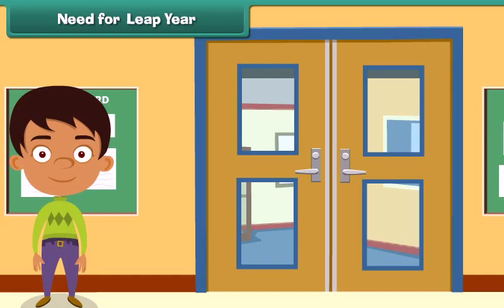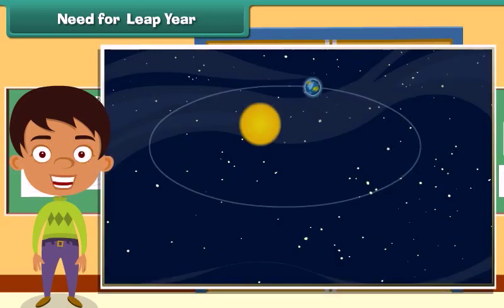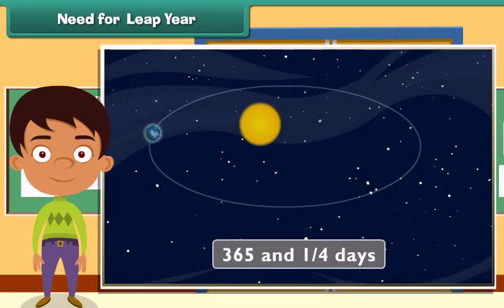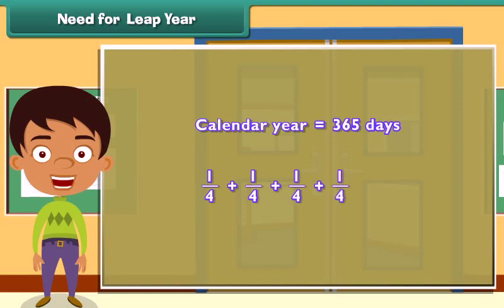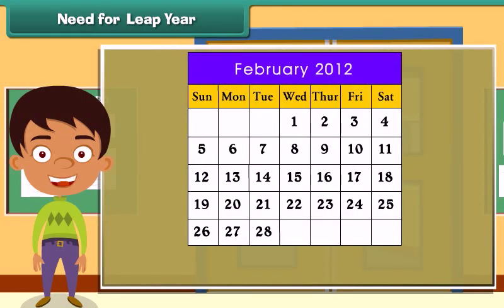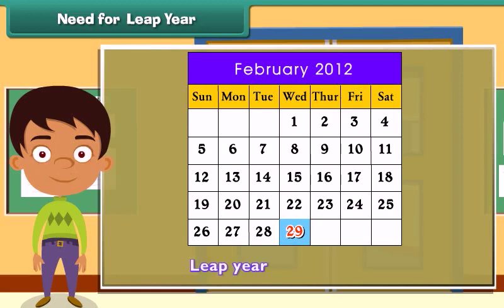Need for a leap year. Earth completes one revolution around the sun in 365 and one-quarter days, but our calendar year has only 365 days. So one-quarter of a day gets left out every year. In 4 years, the leftover quarters add up to 1 full day. Hence, every 4 years an extra day is added in February. Such a year is known as a leap year — February has 29 days and the year itself has 366 days.